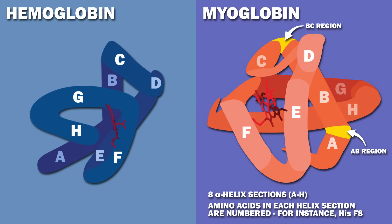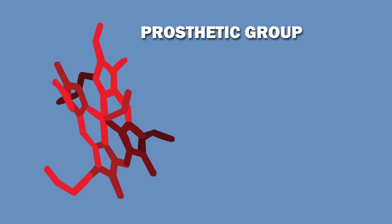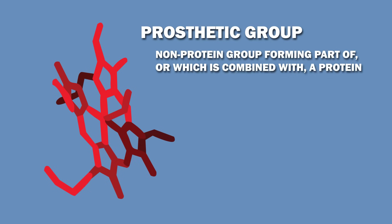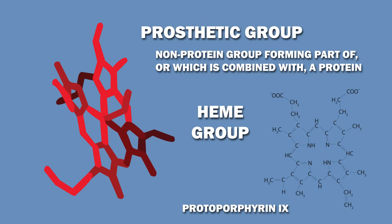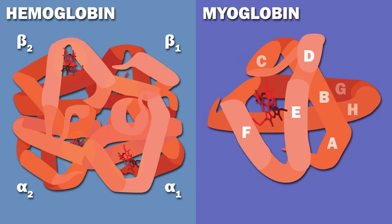Both myoglobin and hemoglobin contain a prosthetic group, which is a non-protein group forming part of, or combined with, a protein. The prosthetic group found in both is the heme group. The heme group is made up of a protoporphyrin ring and a central iron atom. There is a heme group in each of hemoglobin's subunits, as well as in myoglobin's polypeptide chain, nestled in the cleft between the E and F helices.